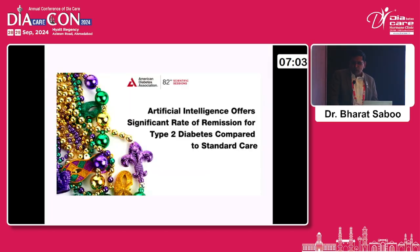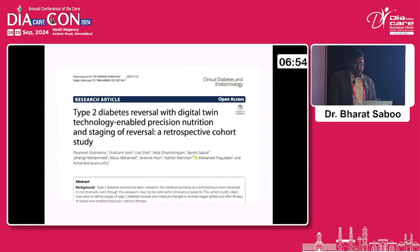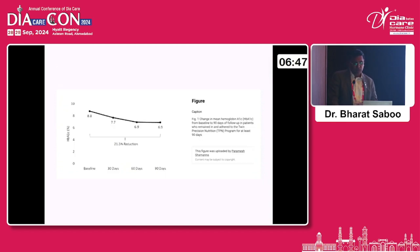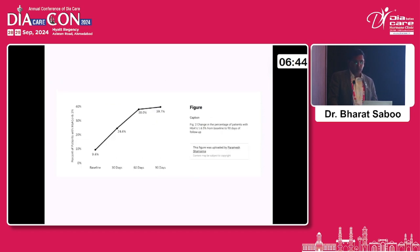This is our own Indian study — artificial intelligence offering a significant rate of remission for type 2 diabetes compared to standard care, which is the Twin study. It has shown that by creating a digital twin of the patient, we are able to reduce HbA1c and get more patients into time-in-range just by making a digital twin and guiding patients accordingly.